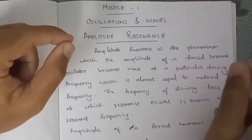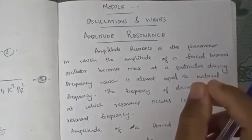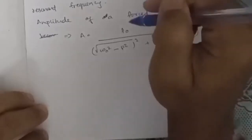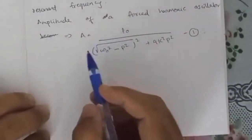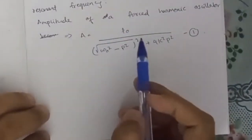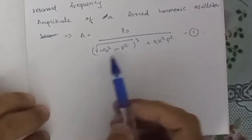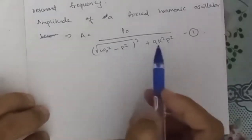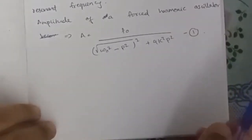At this particular frequency, the amplitude of a forced harmonic oscillator is given by the equation: A is equal to f0 divided by the square root of (omega_0 squared minus p squared) whole squared plus 4k squared p squared.